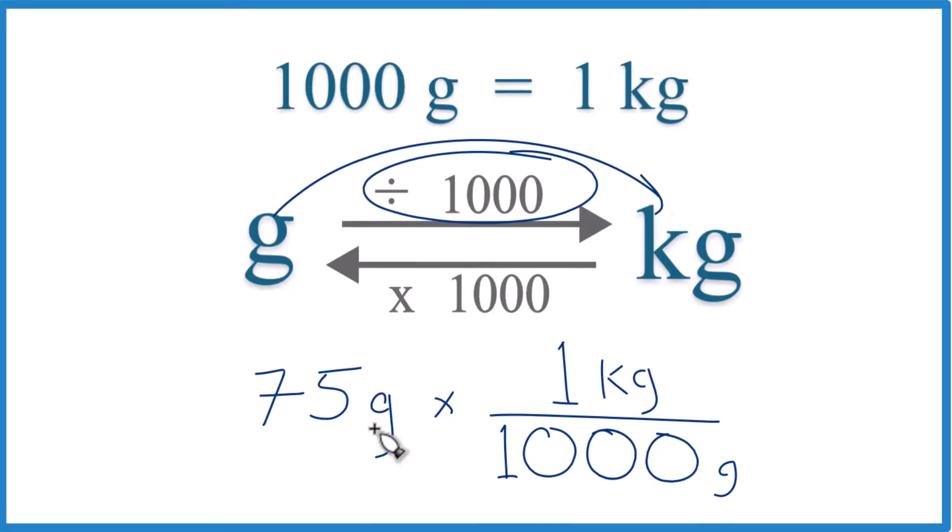Now when you multiply, grams on the top and the bottom, they cancel out. And you end up with 75 over 1,000, and that equals that 0.075 kilogram number we found earlier.